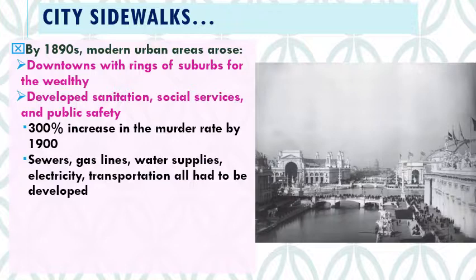One of the problems that cities have to deal with as they grow is all the ways they're going to move people, deal with energy sources, and provide water — things you don't think about when living on a farm near a river. So as cities grow, they have to lay down sewers, gas lines, water supplies, electricity, transportation, railways, street cars, and systems of lighting.